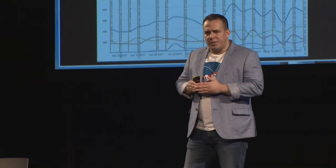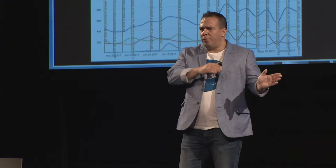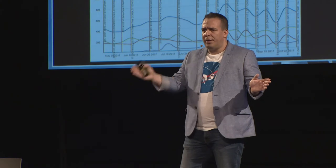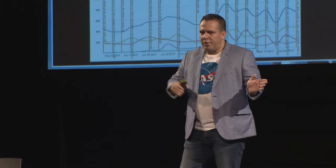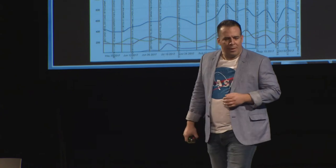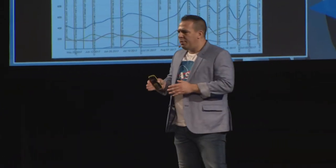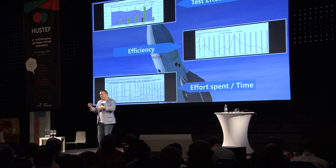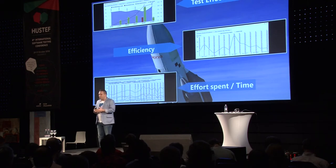We wanted to know at what cost we find those issues in the software. It's not the same spending 1,000 hours and finding 10 bugs, or spending 10 hours and finding the same 10 bugs. Efforts spent per time - we wanted to know when we find those issues, when we do intense testing. Just at the end, right before the release, or do we do continuous intense testing? We assumed we do continuous testing, and we were a large organization, and our assumption wasn't right. It turned out we do late testing most of the time.